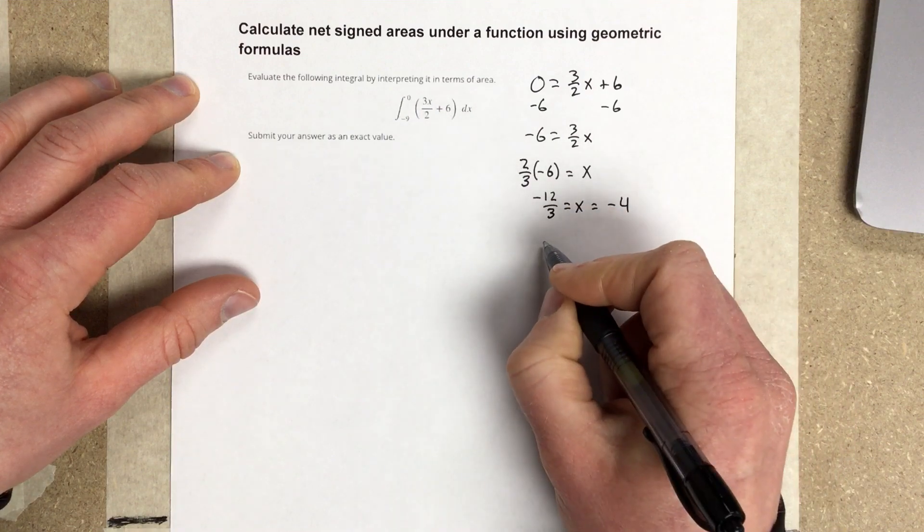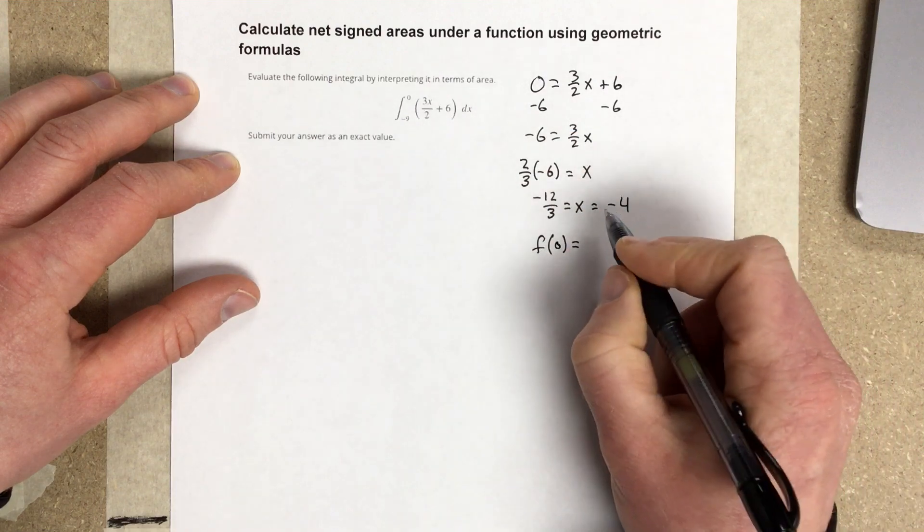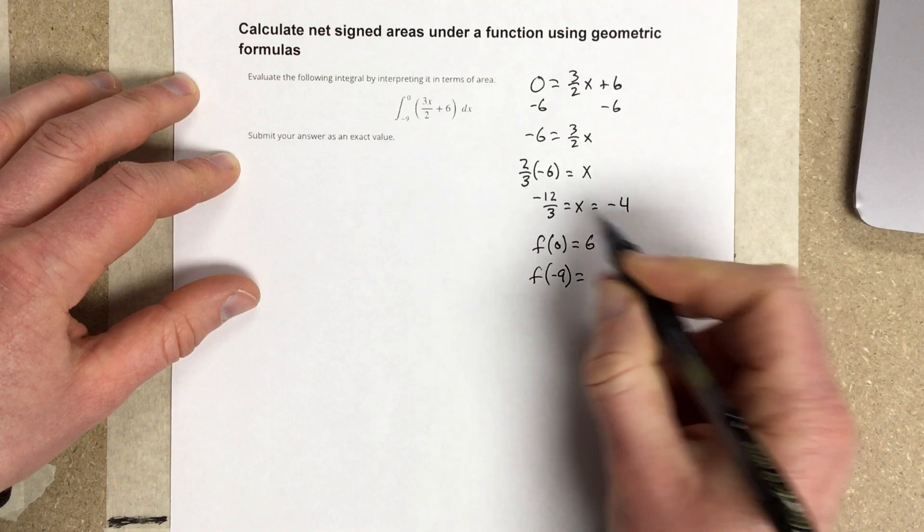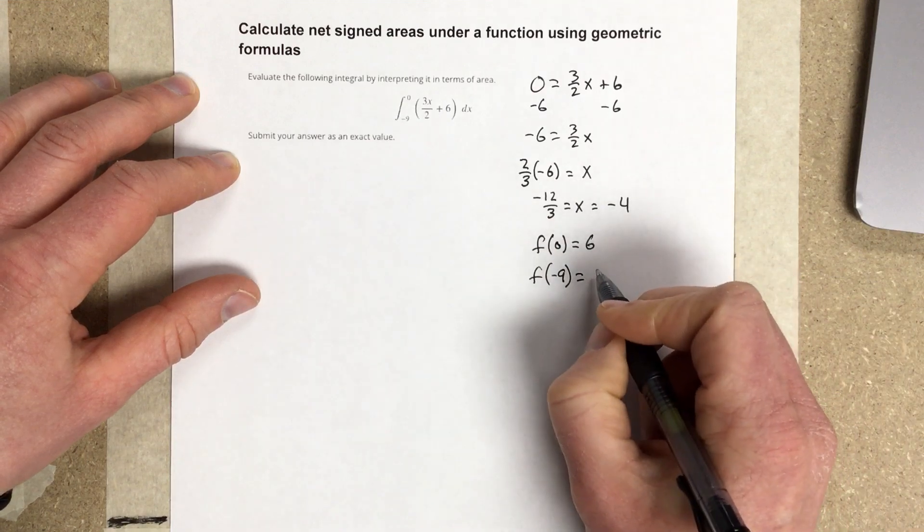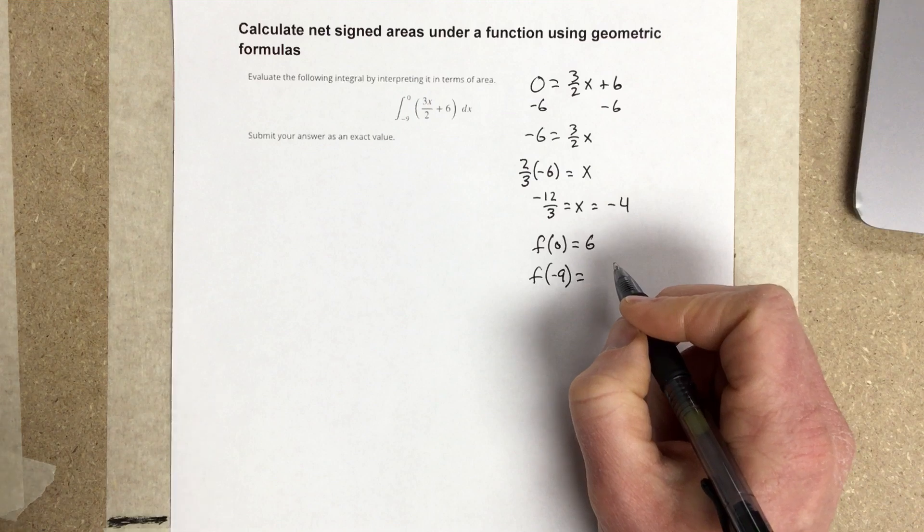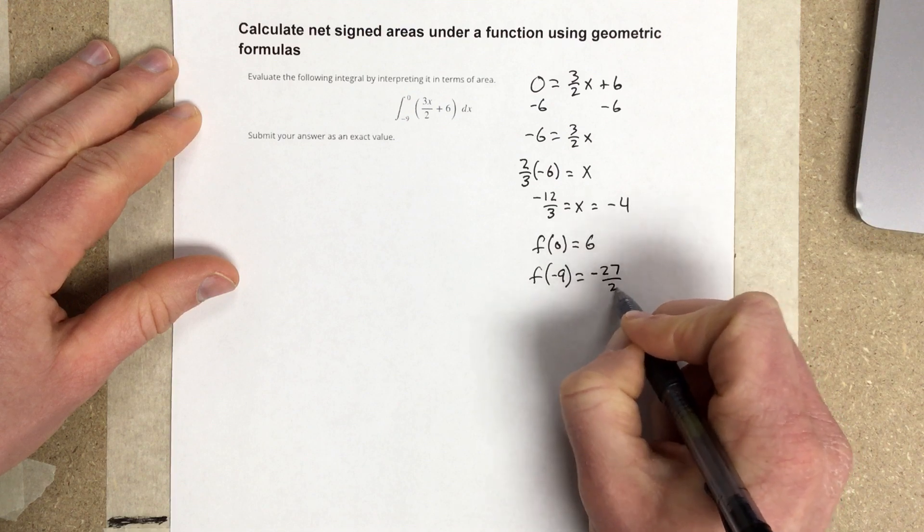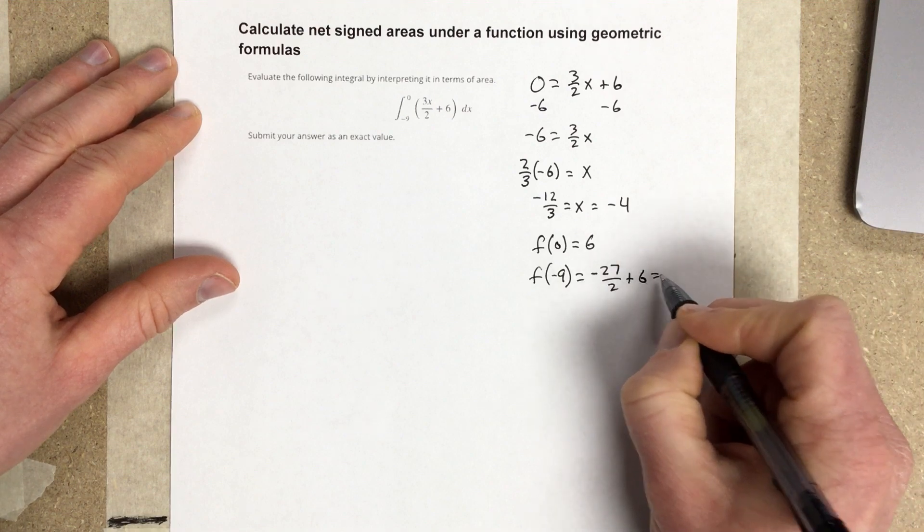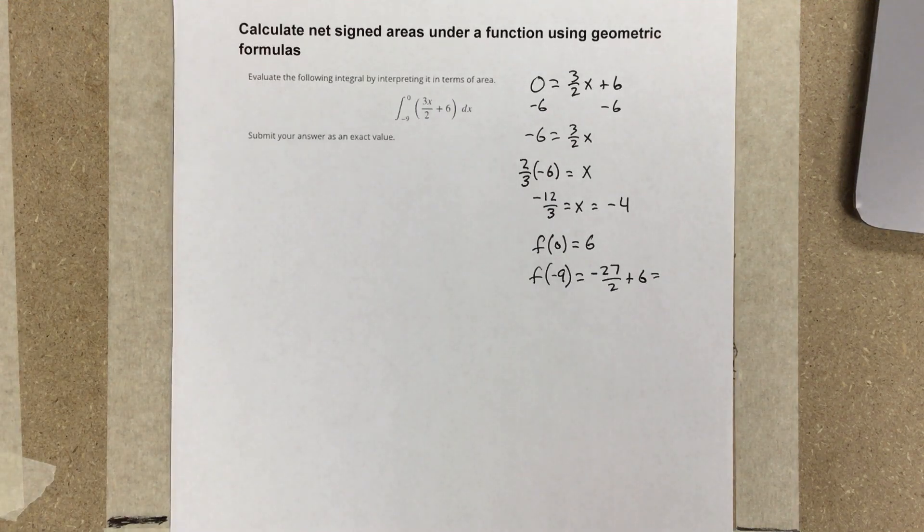And then I'm going to plug in f of 0. And when I plug in f of 0, I get 6. And then I'm going to plug in f of negative 9. When I plug in negative 9, I get negative 9 times 3, which is negative 27. So I get negative 27 over 2 plus 6 when I plug in negative 9. And when I add those together, I end up with 27 divided by 2 plus 6.